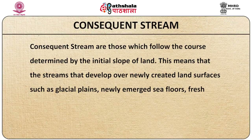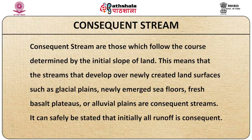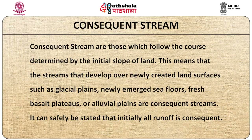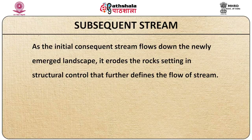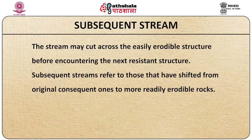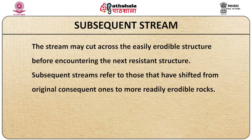Consequent streams are those which follow the course determined by the initial slope of land. The streams that develop over newly created land surfaces such as glacial plains, newly emerged seafloors, fresh basalt plateaus or alluvial plains are consequent streams. It can safely be said that initially all runoff is consequent. As the initial consequent stream flows down the newly emerged landscape, it erodes the rocks, setting in structural control that further defines the flow of stream. The stream may cut across easily erodible structure before encountering the next resistant structure.